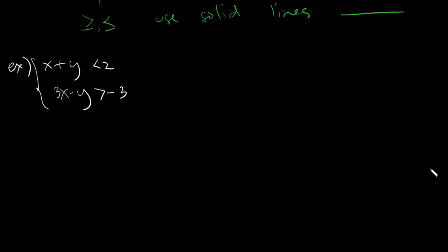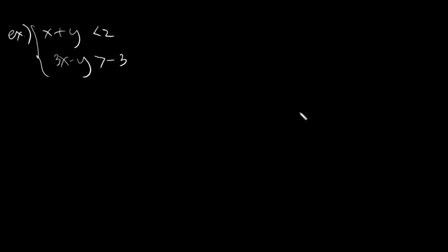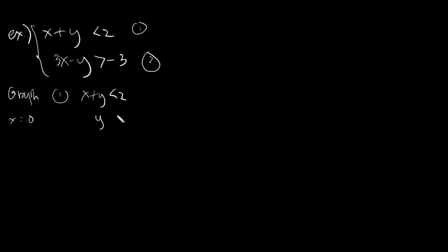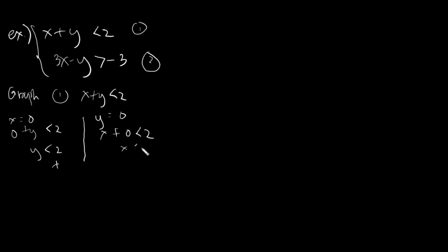We will have two shaded parts and two lines. So let's start. The first thing we need to do is graph the first equation and then the second equation. For graphing the first equation, we use x equals 0 and y equals 0. Having x as 0, we get 0 plus y is less than 2, so y is less than 2 — this is positive. Then with y as 0, we get x plus 0 is less than 2, so x is less than 2 — also positive.